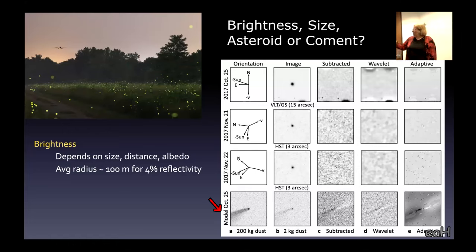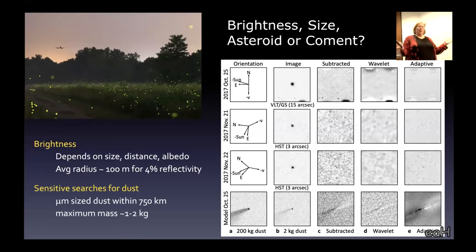The bottom row is actually a model of the tail. If we had thrown 200 kilograms of dust into space, that's what it would look like. The second one on the bottom, you can barely see any dust. And that one is if we threw two kilograms into space. The three columns represent filtering techniques. Absolutely nothing. So we come to the conclusion, this is an asteroid. There's no dust at all.